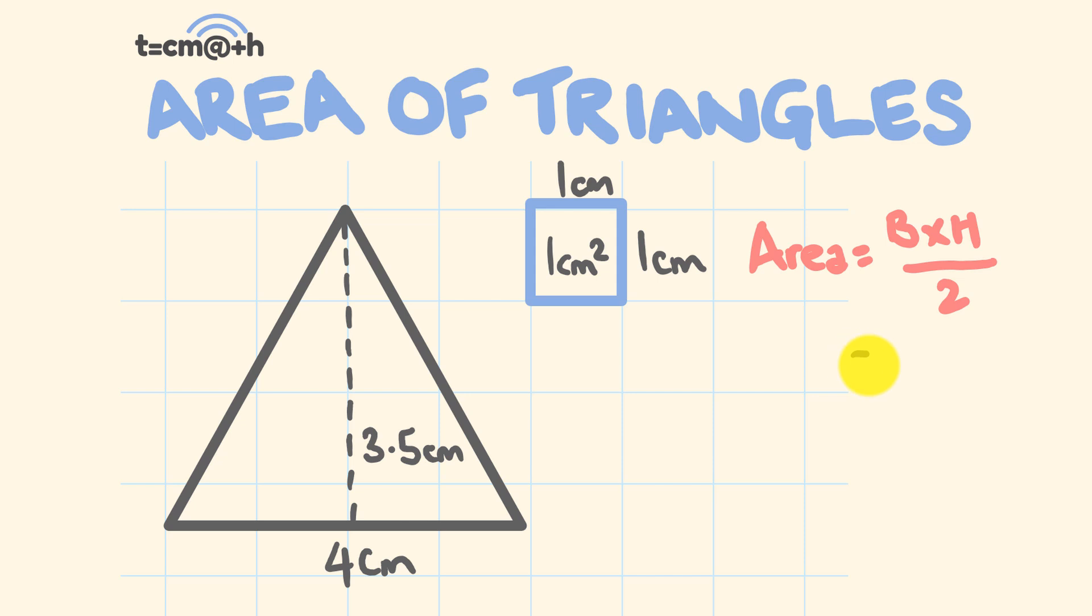So the area is equal to the base here, which is four centimeters. This is multiplied by the height, which is 3.5 centimeters. And this whole lot is divided by two. So what do we have here? Four centimeters by 3.5 centimeters. Well, that is equal to 14 centimeters squared divided by two. Our answer is seven centimeters squared. It's pretty simple, right? Working out the area of a triangle is very, very easy.